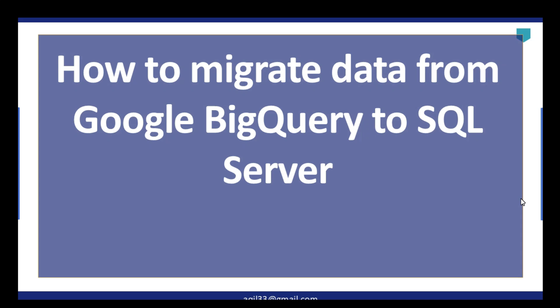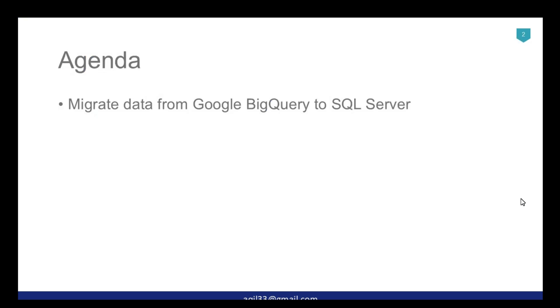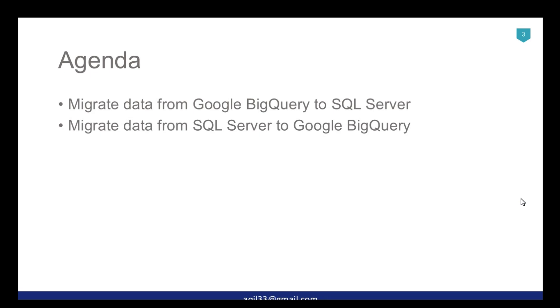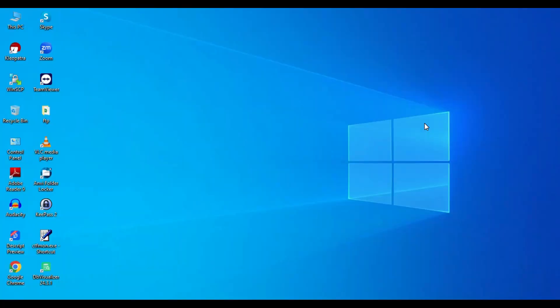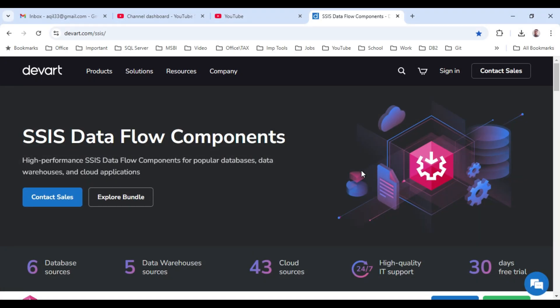Hi friends, my name is Akhil Ahmad and in this VG tutorial I will show you how to migrate data from Google BigQuery to SQL Server and vice versa. We will migrate data from Google BigQuery to SQL Server using SSIS, and then from SQL Server to Google BigQuery using SSIS as well. For this migration we will be using the SSIS data flow components from DevArt. You can download the trial version free for 30 days, or purchase with an additional 10% discount using the LearnSSIS10 coupon code.